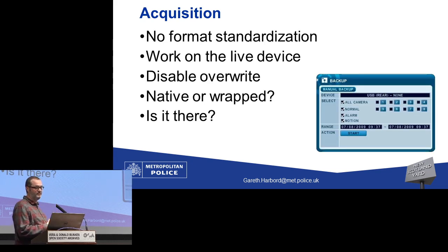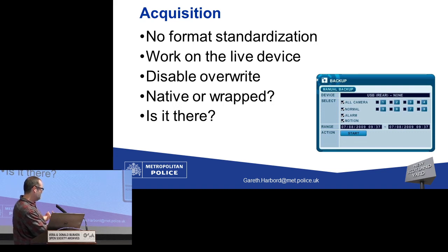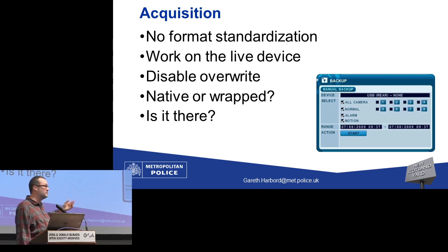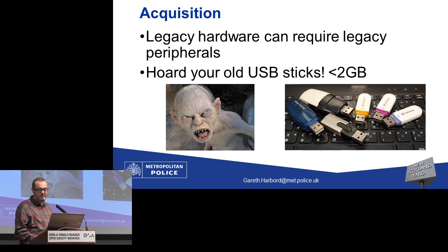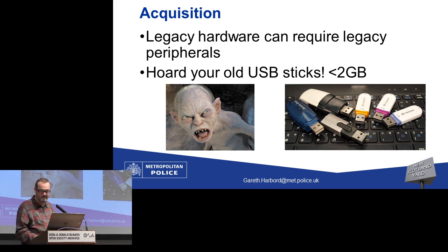When you go to do a download from a DVR, you'll get some sort of screen — it's always quite vague. You'll often find there's 'normal' meaning standard recording, 'alarm' meaning motion, or 'motion' also meaning motion — the terminology is very interchangeable, they just make it up as they go along. You disable the overwrite as soon as you turn a unit on to stop it recording over the oldest stuff, making it a little safer to work on the live system. The first thing we try to work out is just: is it on there? We try to keep our legacy peripherals — if a USB stick is less than two gigabytes, I keep it. I've got weird USB male-to-male cables and all sorts of things I harvest and hoard.